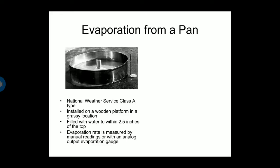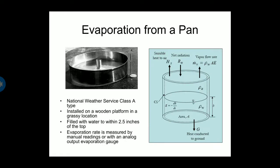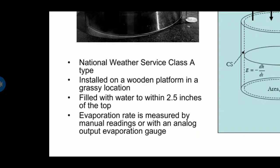Evaporation from a pan is a natural evaporation process. The National Weather Service Class A type is installed on a wooden platform in a grass location, filled with water within 2.5 inches of the top. Evaporation rate is measured by manual readings or with an analog output evaporation gauge.